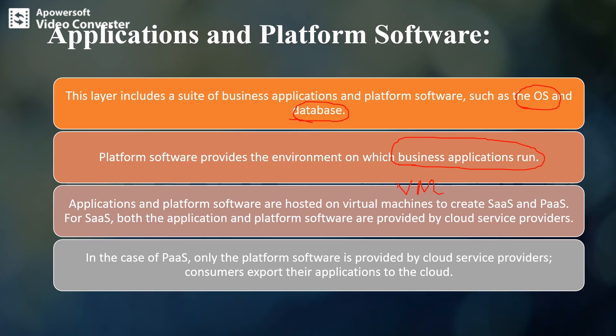The cloud service provider provides the application and platform software where the actual applications can run. In the case of PaaS, only the platform software is provided by the cloud service provider, and the consumers deploy their own applications to the cloud.